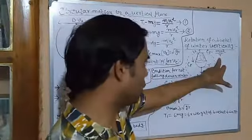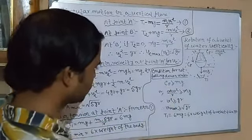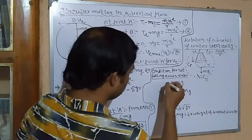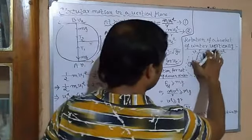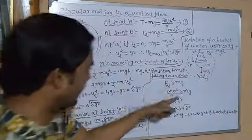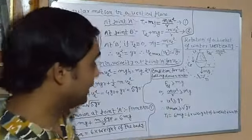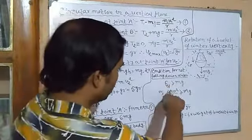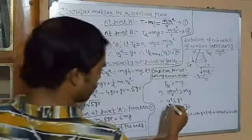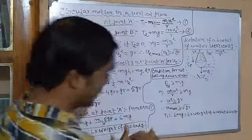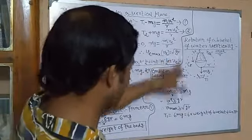Putting the value of centrifugal force: mv²/r ≥ mg, which gives v² ≥ gr. So v ≥ √(gr) — same as the critical velocity condition. The velocity at the top must be greater than or equal to √(gr) for the water not to fall down.